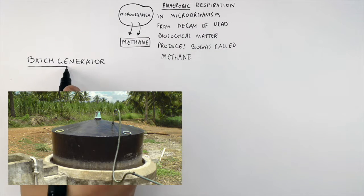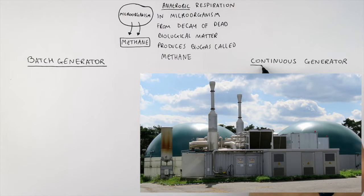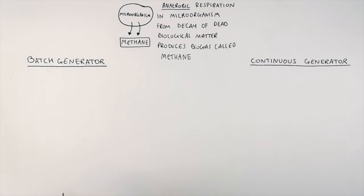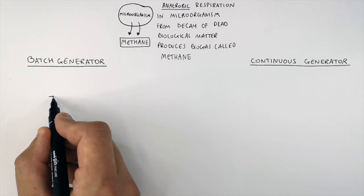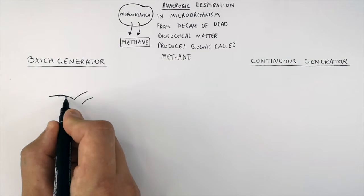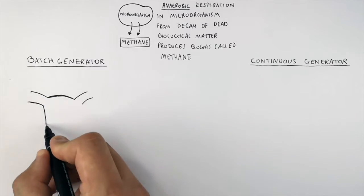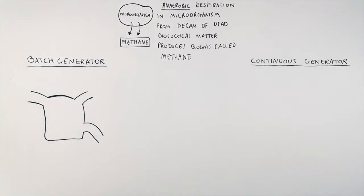So what's the difference between a batch generator and a continuous generator? Both of them are going to produce biogas, but what's the difference between the two? This here is a batch generator. It produces biogas in batches.